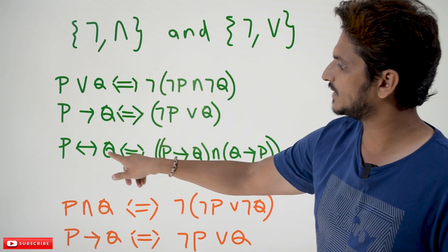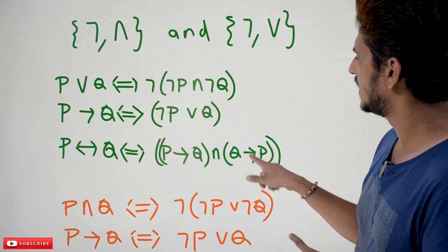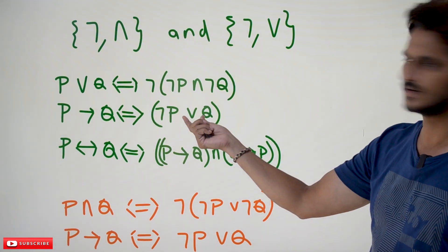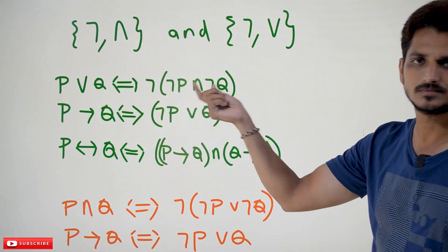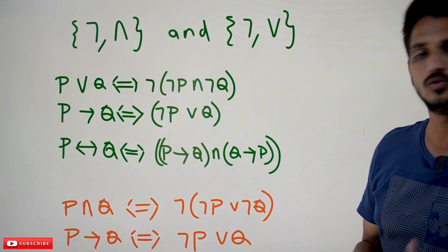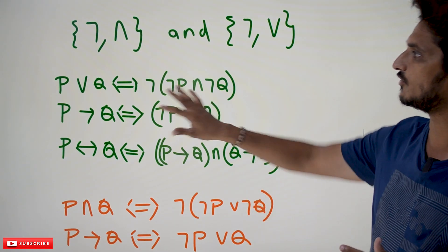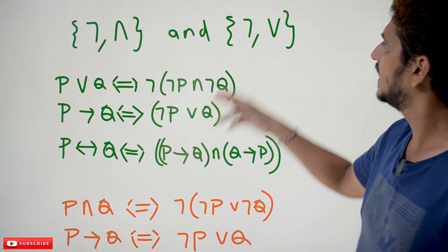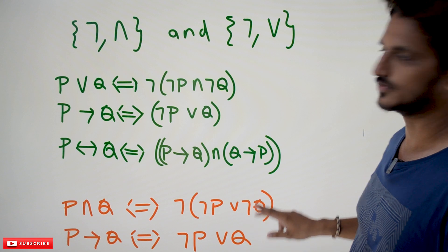Similarly, P double implies Q can be written as (P implies Q) conjunction (Q implies P). Implies means you can write it in disjunction. Disjunction means you can write it in conjunction. So you take any proposition, you can write it in the form of negation and conjunction, or similarly in the form of negation and disjunction.